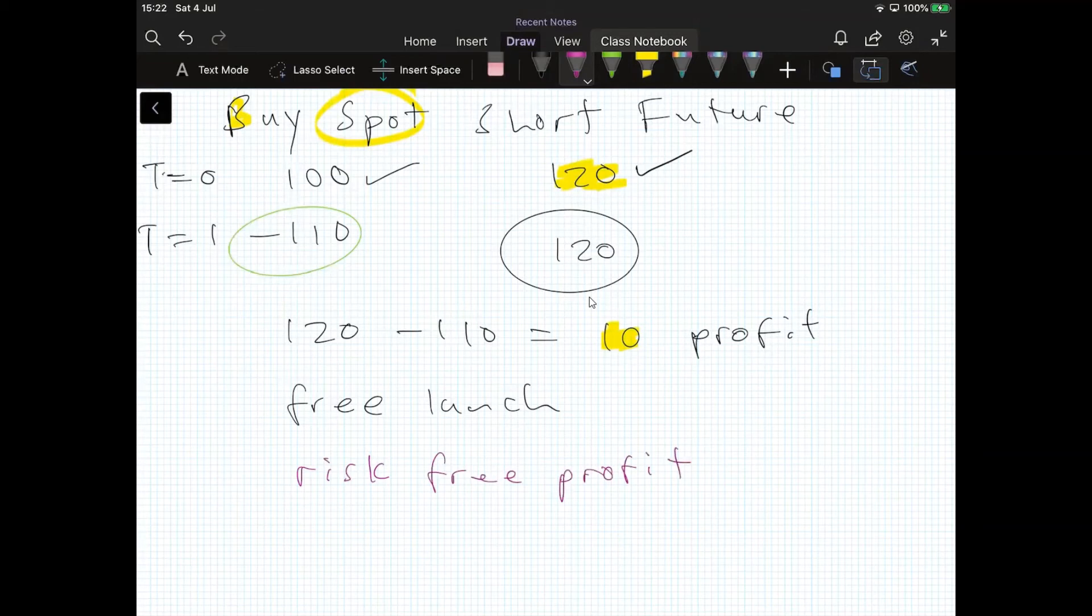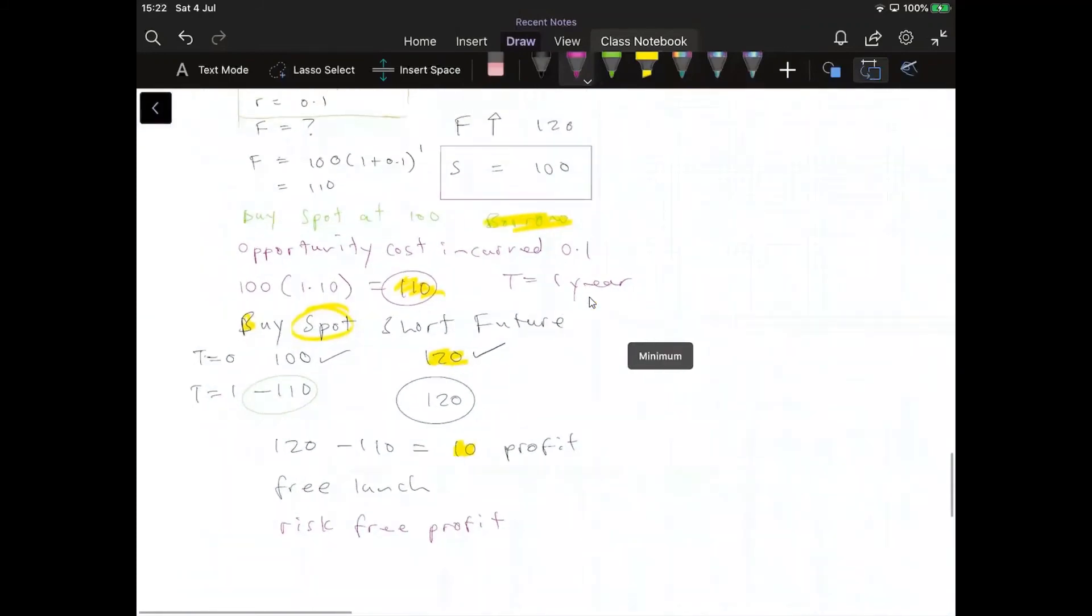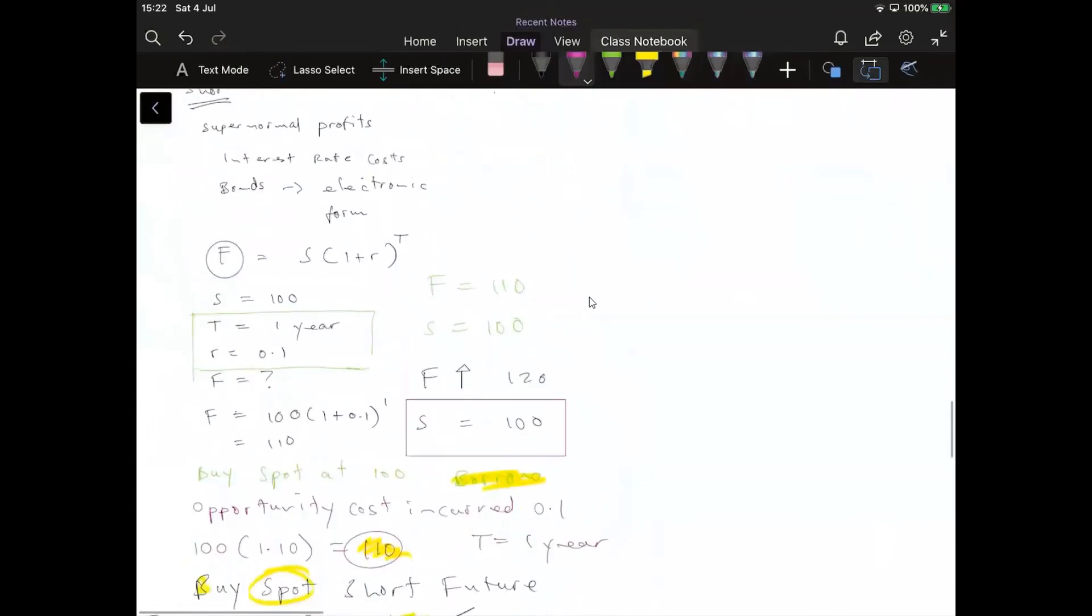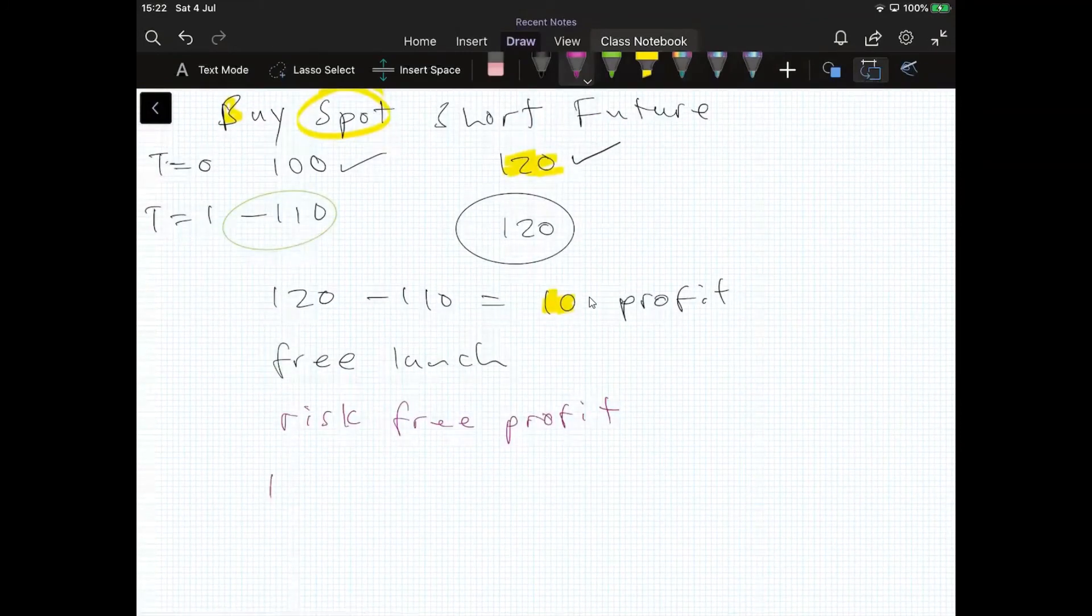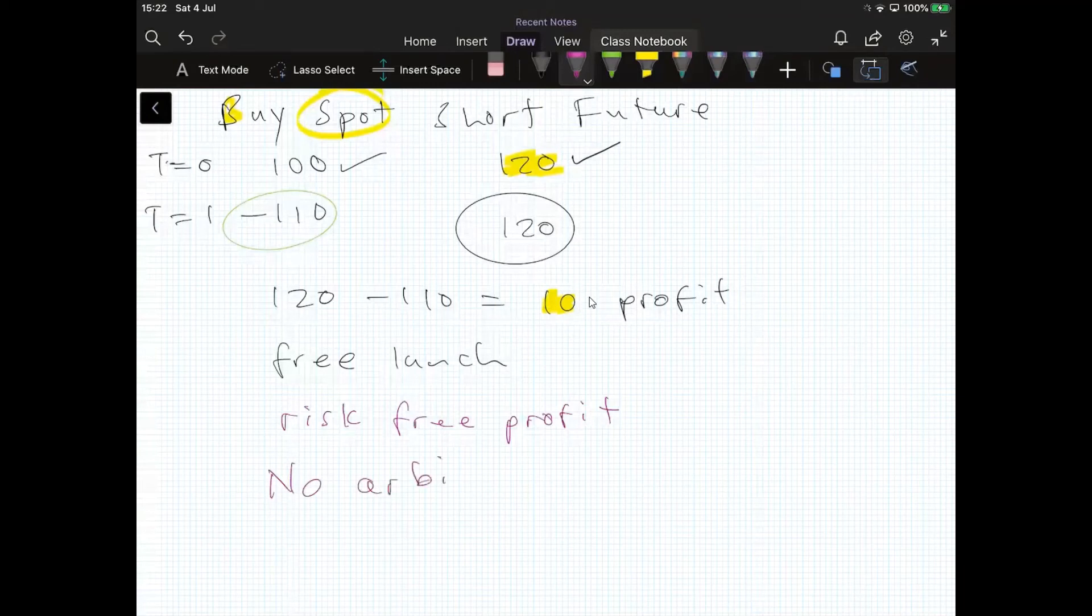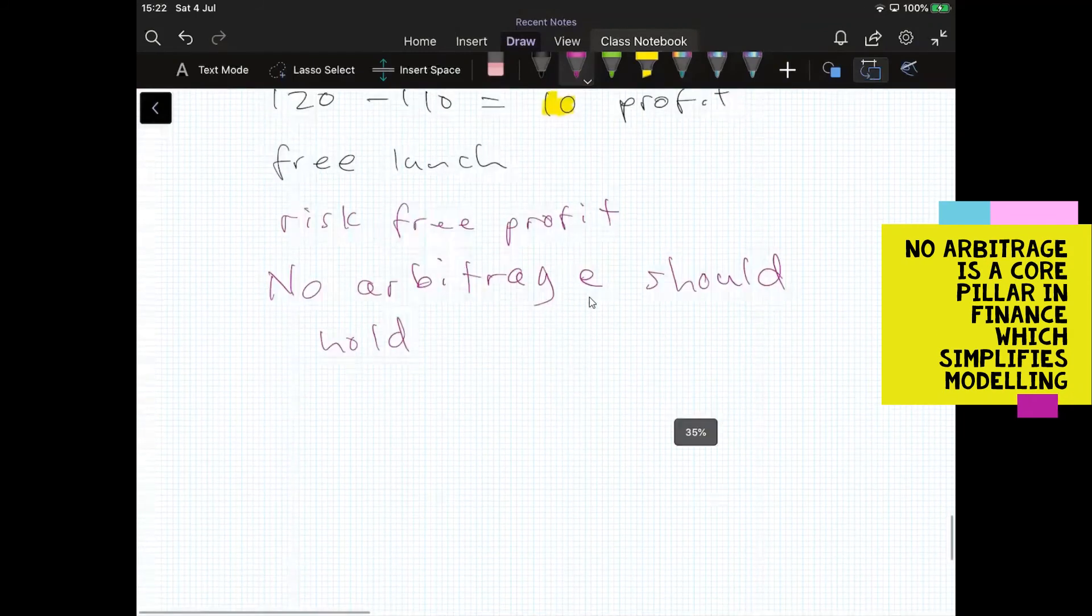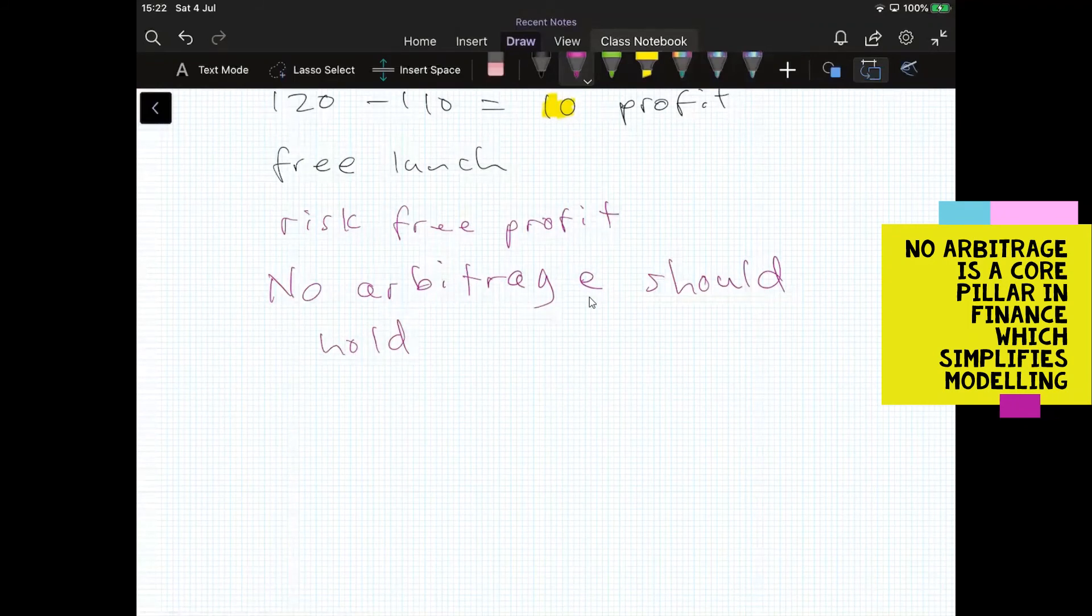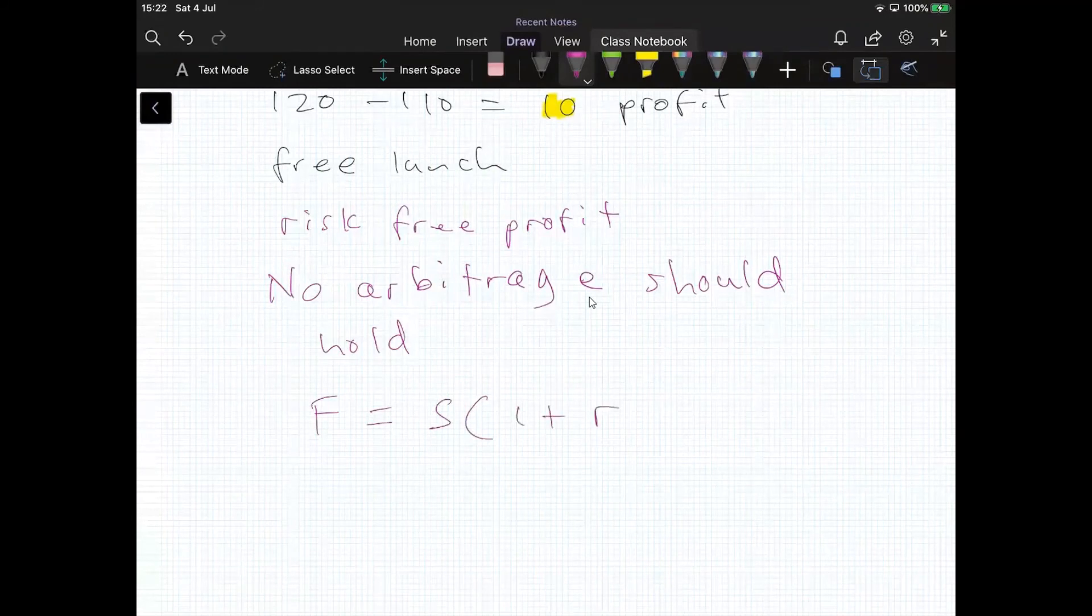If we breach the no arbitrage relationship, then that generates an opportunity to make a profit. So we assume no arbitrage should hold. And that creates a very simplified way of approaching what the appropriate price should be. We would expect to observe the futures price is equal to the spot multiplied by 1 plus r to the power of t.